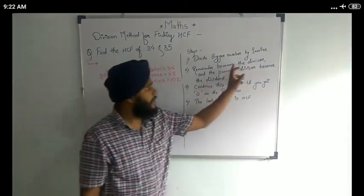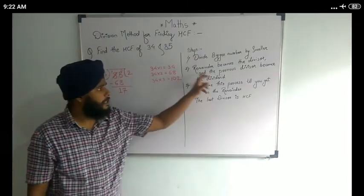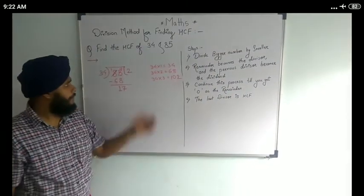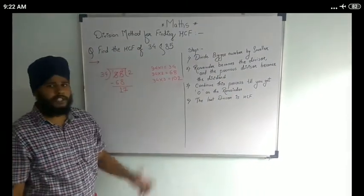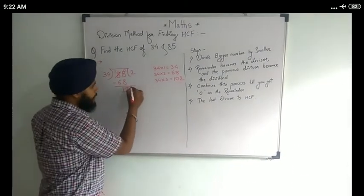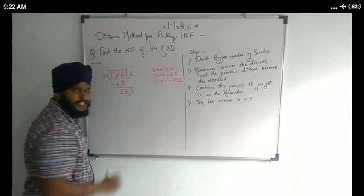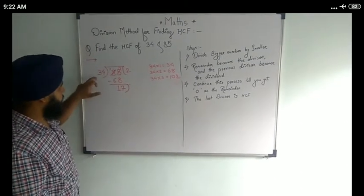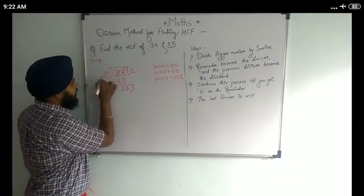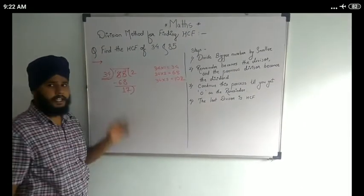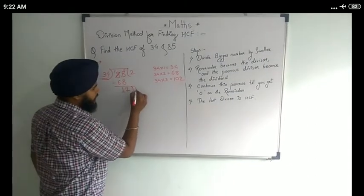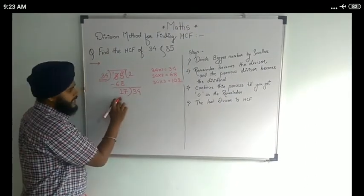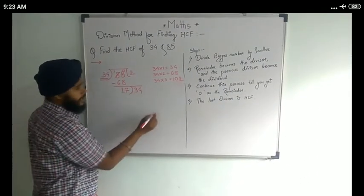Our second step is: the remainder becomes the divisor and the previous divisor becomes the dividend. We are going to continue this division. Now this remainder, 17, will be the divisor, and our previous divisor, that is 34, will become the dividend.